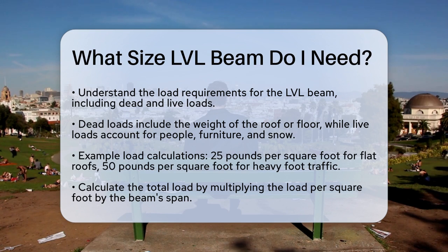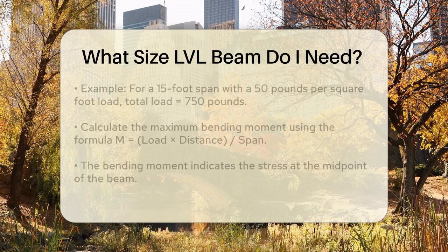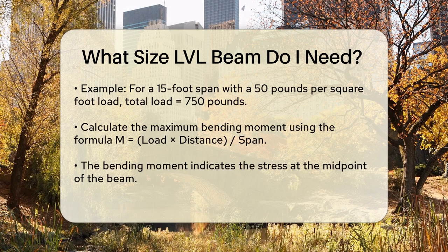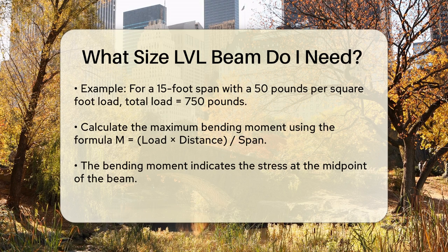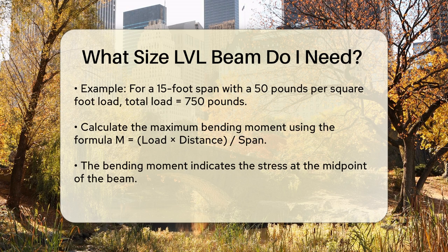Next, calculate the total load by multiplying the load per square foot by the span of the beam. For instance, if you have a 15-foot span with a uniform load of 50 pounds per square foot, the total load would be 15 feet by 50 pounds per square foot, equals 750 pounds.